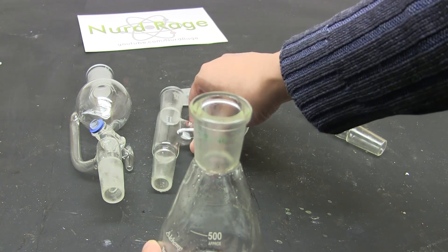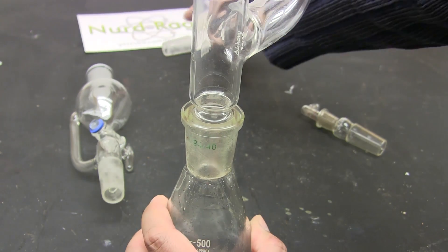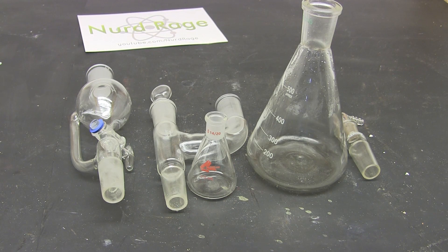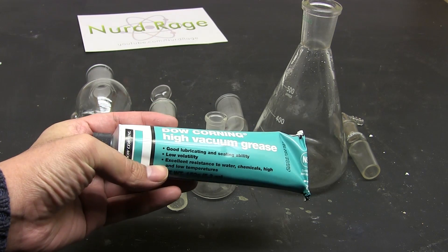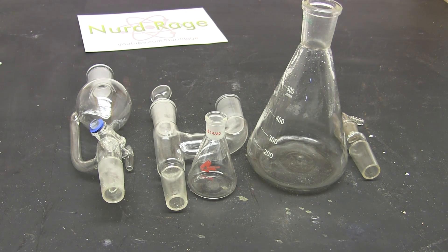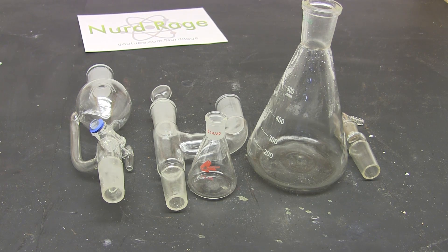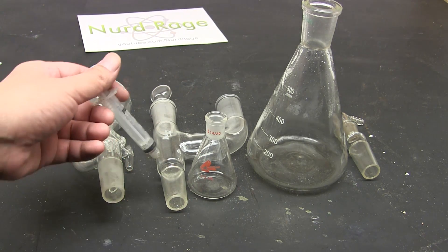Now ground glass joints can seize up and become stuck. To prevent this you must first grease up the joints to both seal and lubricate them. A very common grease is Dow Corning vacuum grease which is quite inert and in general won't harm your reactions. You can also use hardware store greases but be careful as some can react with your chemistry or might decompose at the temperatures you're working with.